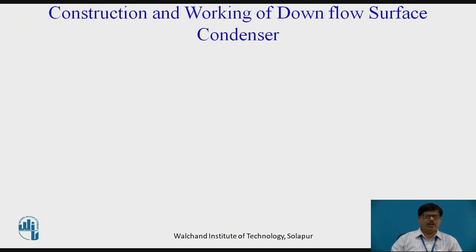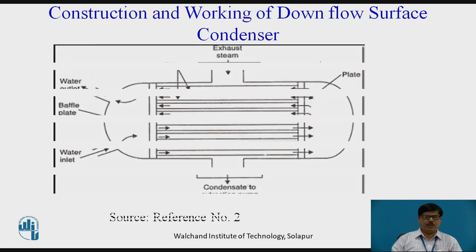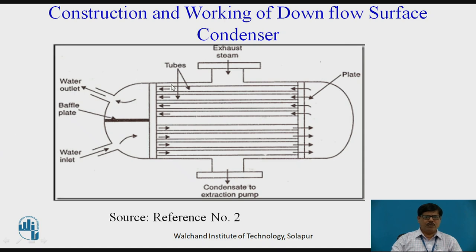Now we will discuss regarding the surface types of condenser. Firstly, we will discuss about the construction and working of downflow surface condenser. As we can see in this figure, the downflow type surface condenser has a cylindrical shell made up of cast iron, closed at each end with covers to form the water boxes. Inside this shell, tube plates are provided at each end between the condenser shell and end covers. These tube plates are provided with water tubes and at the center of this surface condenser, a baffle plate is provided to divide the water flow into two parts. The exhaust steam is admitted from the turbine from the top side and enters into the condenser shell.